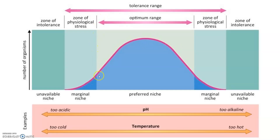This graph shows the number of organisms that can be expected to survive within these conditions. The optimum range is at the top of the bell curve, where most organisms will survive. As you get closer to the extremes, we see a die-off of organisms to a point where most do not survive — that's the zone of physiological stress — and eventually no organisms can survive at all.